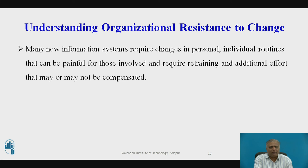In this model, the only way to bring about change is to change the technology, task structure, and people simultaneously. Because organizational resistance to change is powerful, many information technologies fail and do not increase productivity. Research on project implementation failure demonstrates that the most common reason for failure is not the failure of technology but organizational and political resistance to change.